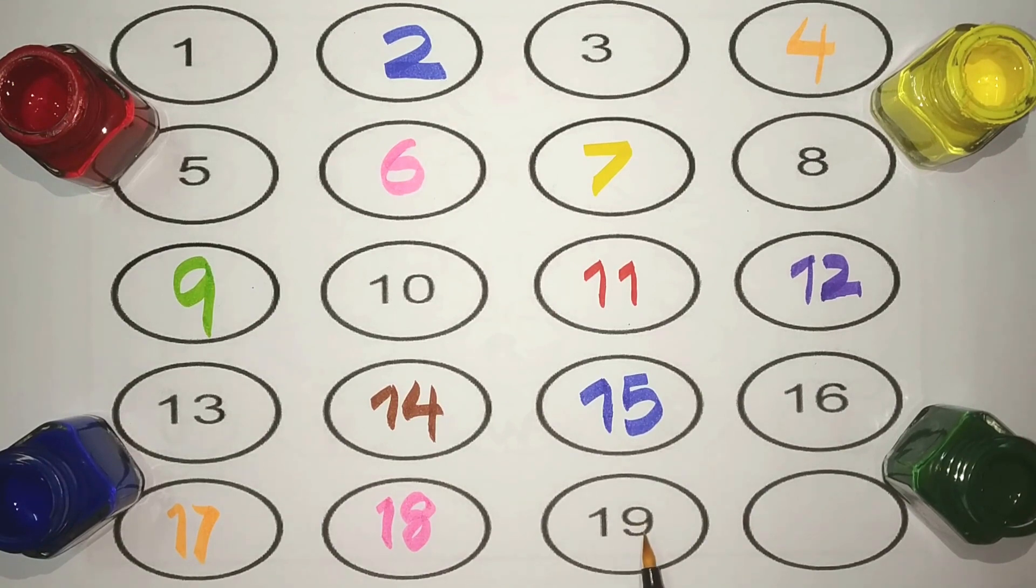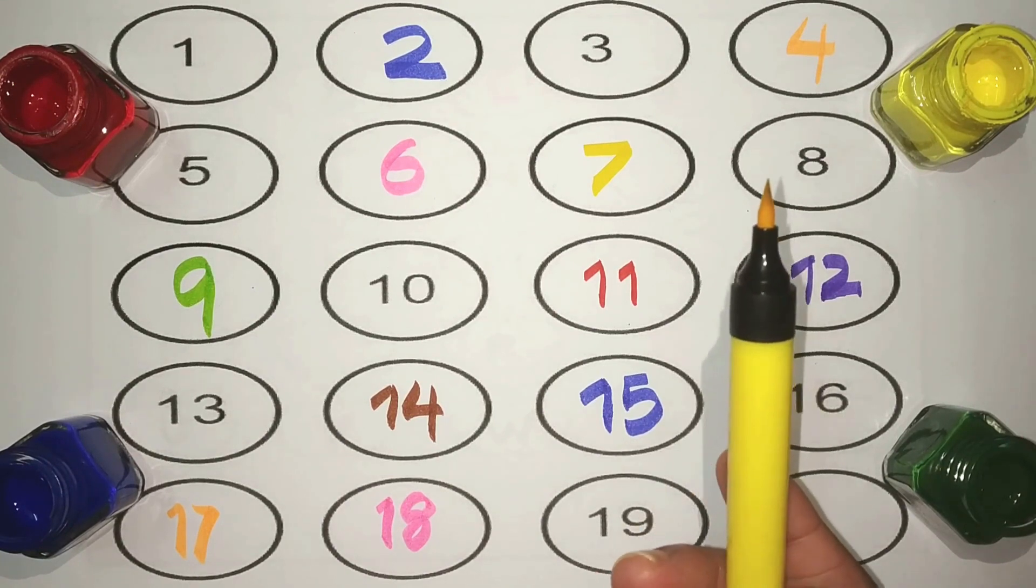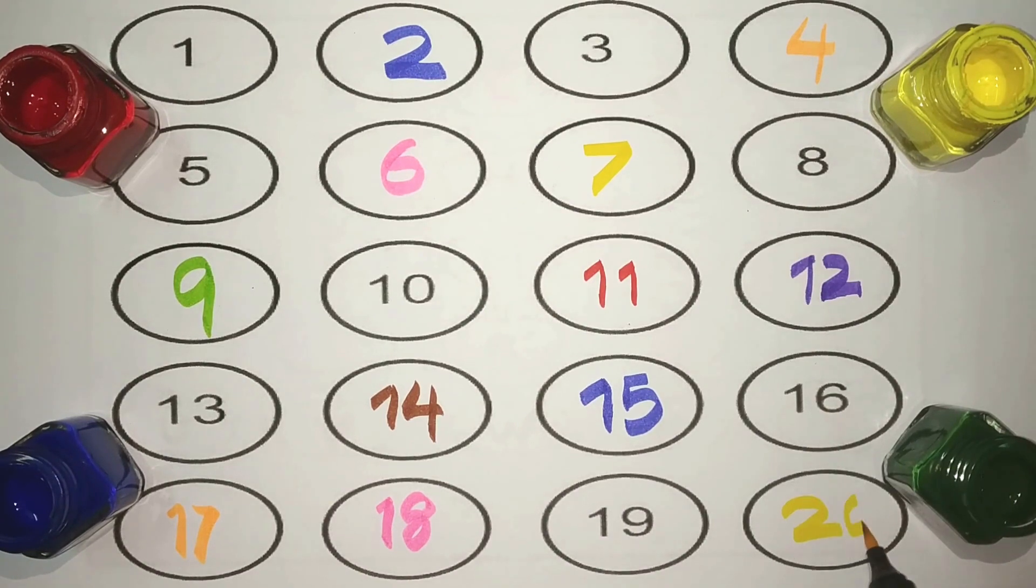One, nine, nineteen. Yellow: and two, zero, twenty.